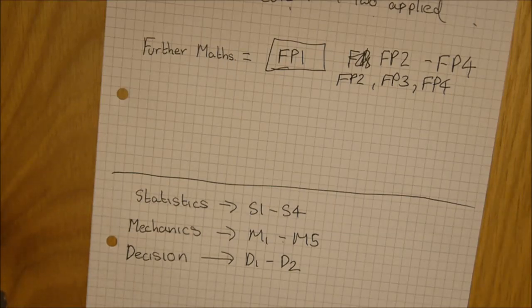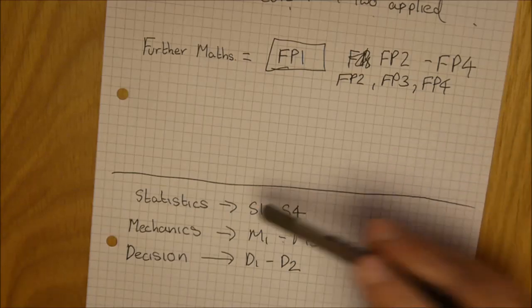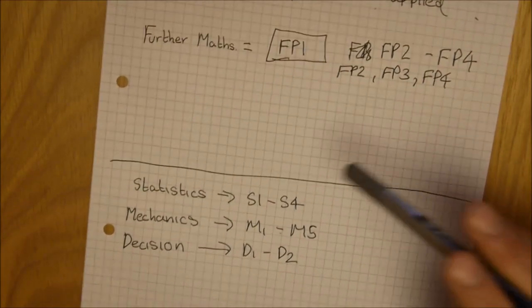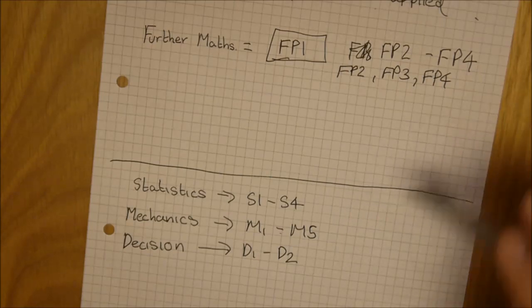And the rest of them can be made up of FP2, FP3, FP4, so you can do all four further pure units, you can do three further pure units, or you could do the higher end stats units, so S3 and S4, M3, M4, M5, and D2.